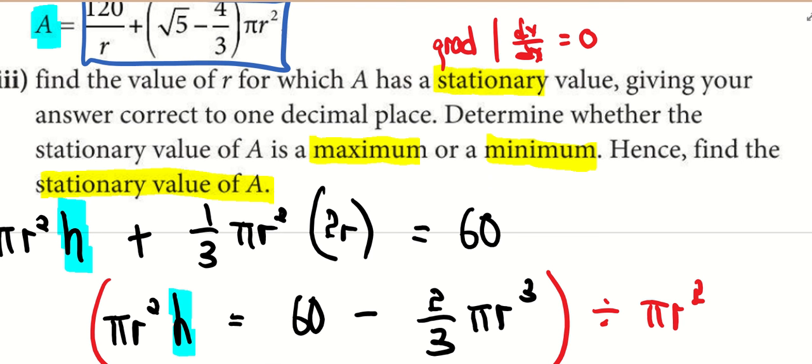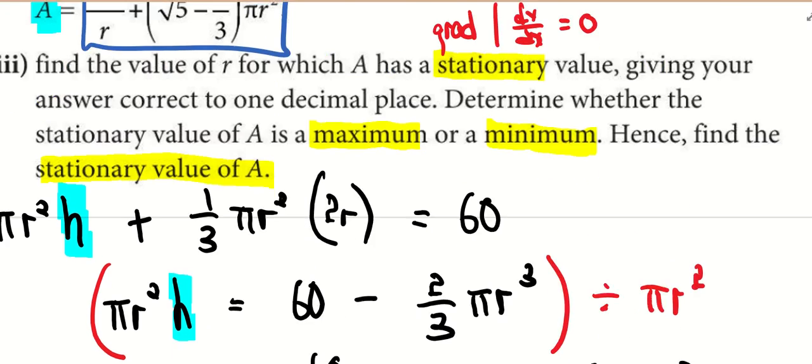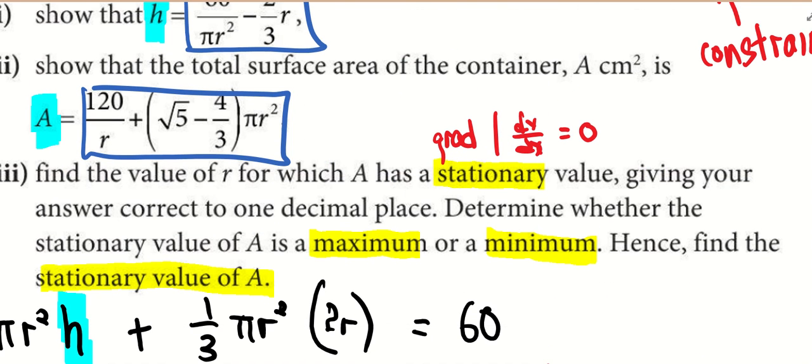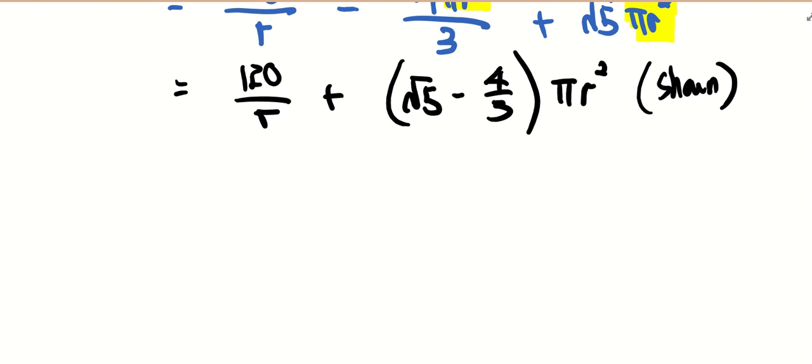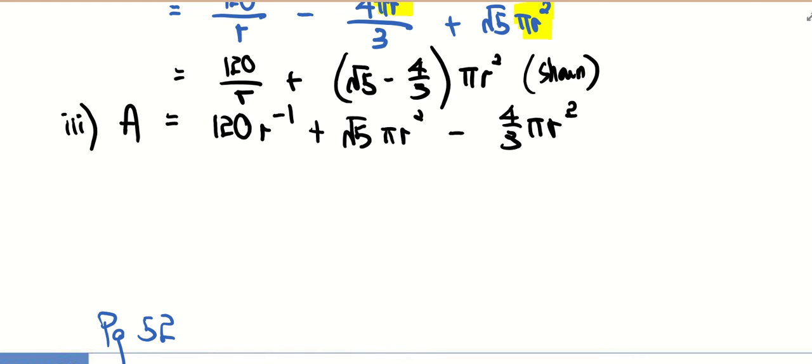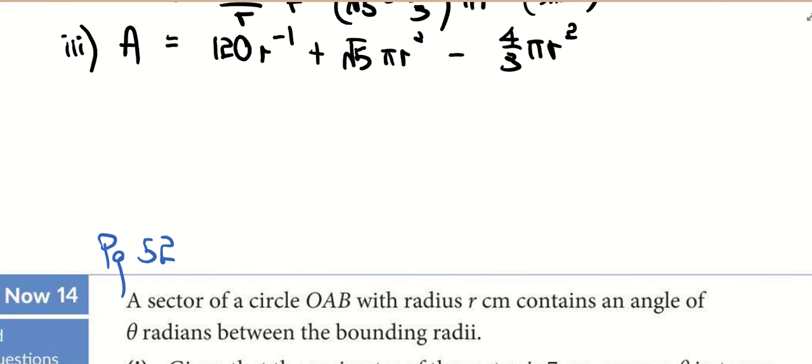So there are three things we need to do in part three: stationary value. But ladies and gentlemen, you tell me stationary value—yes, gradient equals zero, dy/dx equals zero. But in this question, where I got dy/dx? This question has what? What is the subject? A is in terms of r, so can I use dy/dx? No. You need to change, be flexible: dA/dr, because A is the subject, is in terms of r. Doesn't mean always gradient equals zero, dy/dx equals zero—depending on the question. This means to tell me the first derivative is equal to zero.